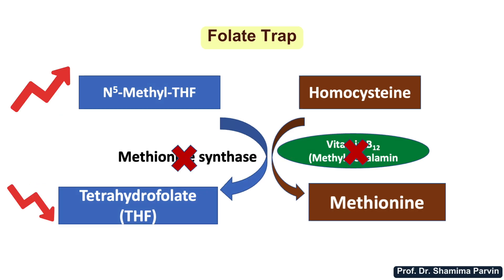A shortage of these enzymes will prevent the conversion to tetrahydrofolate and methionine. As a result, the amount of the inactive form of folic acid will increase in the blood and the active form will decrease. This is the basic mechanism of the folate trap.